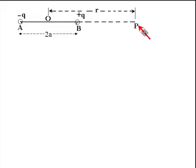The distance of P from the point O is measured as R. Now O is the midpoint of AB, which says that the distance of minus Q from P will be R plus A, and the distance of point B from P will be R minus A.